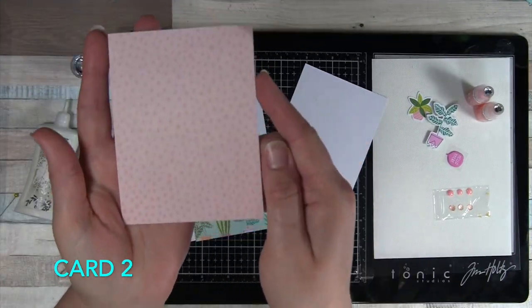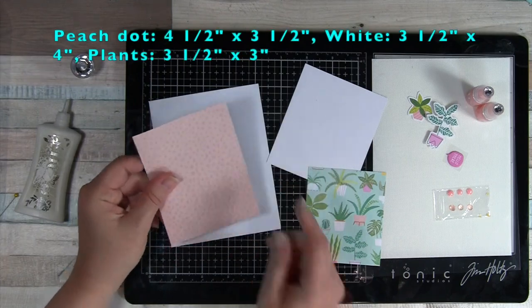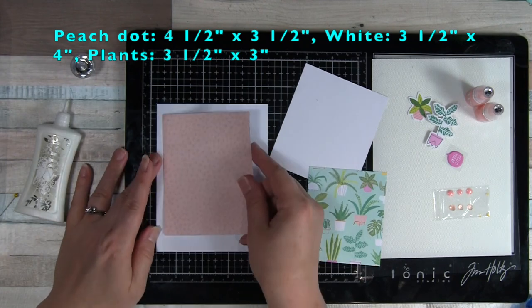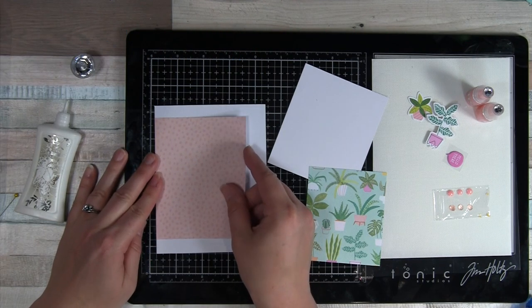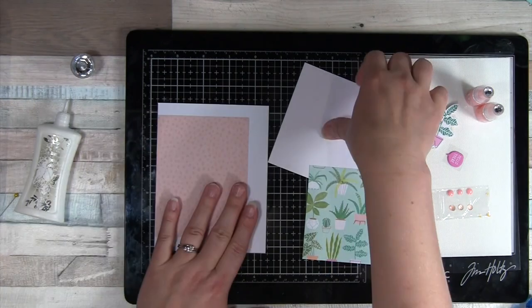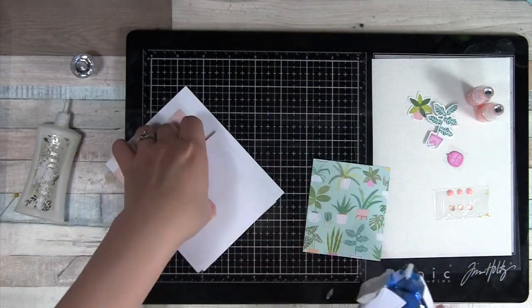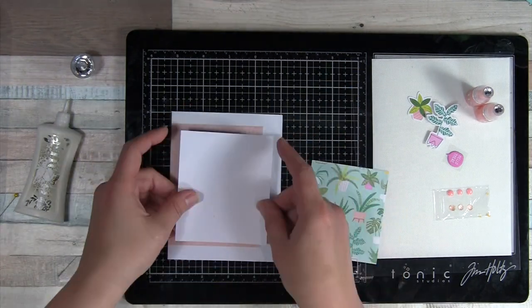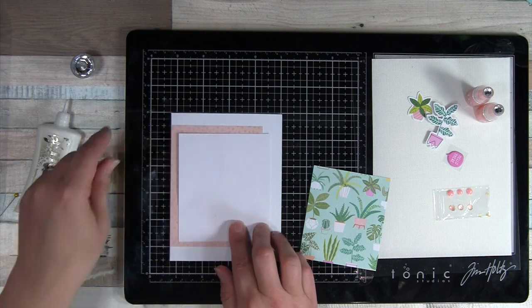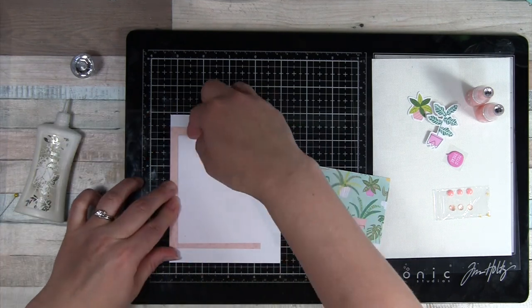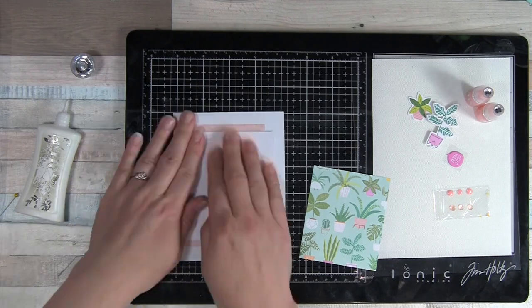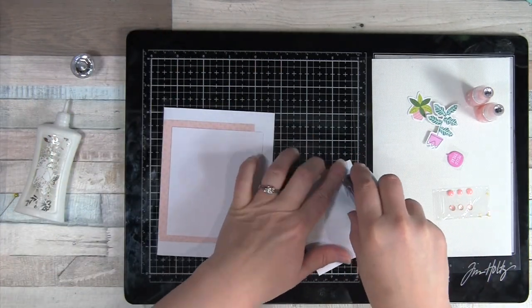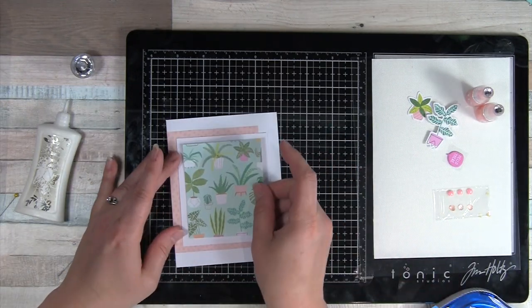For card number two, I'm going to use this peach dot patterned paper and the plants patterned paper. When I first saw the plants, I wasn't excited and didn't think I was going to use it. Yet this turns out to be one of my favorite cards. The plant paper is an accent, not the total focal point of the card, but it works really well like that. I'm taking the white card and letting it go roughly a quarter inch over the edge of that peach patterned paper. Then the plants will be centered on the white card.